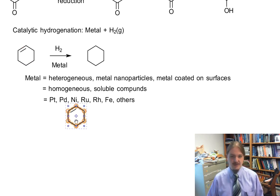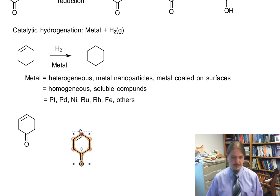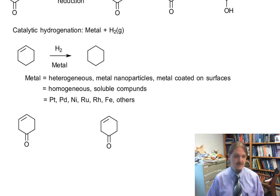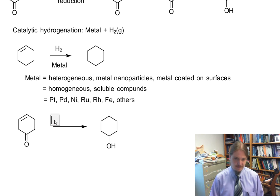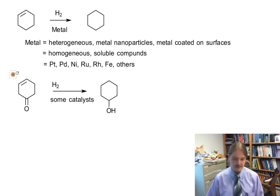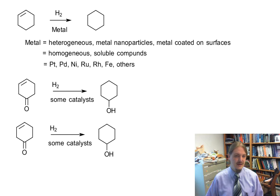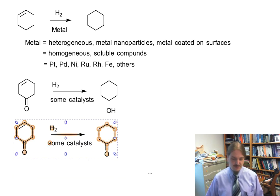In a molecule that has an alkene and a carbonyl functional group, we need to be careful. Some metal catalysts will reduce both functional groups. Some catalysts are only going to reduce the alkene. There are a few that will reduce the carbonyl, and there are some that will only reduce the carbonyl, but we're not necessarily going to talk about those.